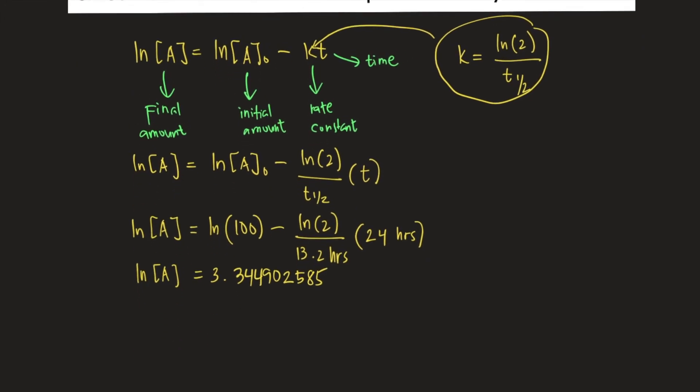If you want to solve for A, you need to do e raised to ln(A). So e is your Euler's number, e raised to 3.344902585.